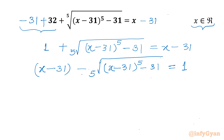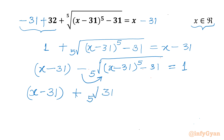Now I will put the constant on one side and the variable on the other, and take the minus sign into the radical. So I can write x minus 31 plus the 5th root of (31 minus x) raised to the power 5, and the right-hand side will be 1.